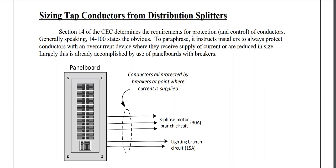First, we need to understand what a tap conductor is. A tap conductor is where we do not have any overcurrent protection on the conductor, or there's a reduction in size without overcurrent protection. Largely in the electrical industry, this has already been accomplished by use of panel boards with breakers, where all of the conductors are protected by breakers at the point where current is supplied, and therefore they are not tap conductors.